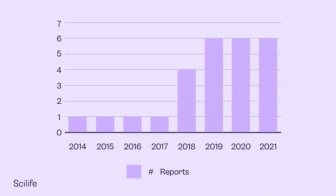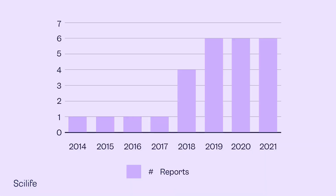The number of GDP non-compliance reports has increased in recent years. From 2019 to 2021, the European Medicines Agency published a total of 16 non-conformity reports. The majority of incidents involve the responsible person, premises and storage areas.